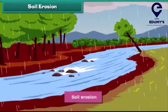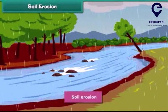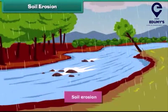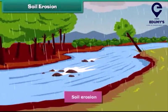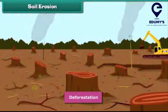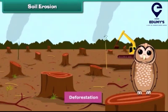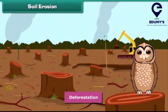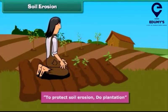Soil erosion — do you know what soil erosion is? Sometimes the soil is carried away by wind and water; this is called soil erosion. You will be surprised to know that cutting of trees also causes soil erosion. Soil erosion makes soil infertile. We can protect against soil erosion by planting more and more trees.